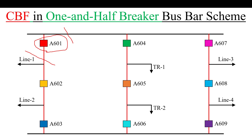If any one of the five failure conditions occurs to A601, its CBF relay will operate and send a tripping command to the other associated breakers. On the right side we have A604 and A607, so the CBF relay of A601 will send its tripping command to A604, A607, and on the other end to A602 and also to the line going to the remote end station.